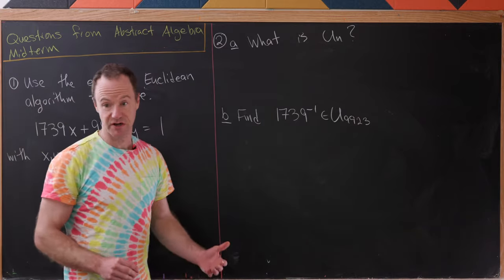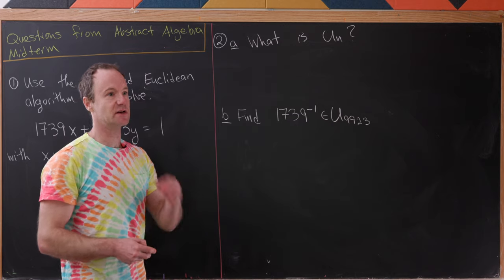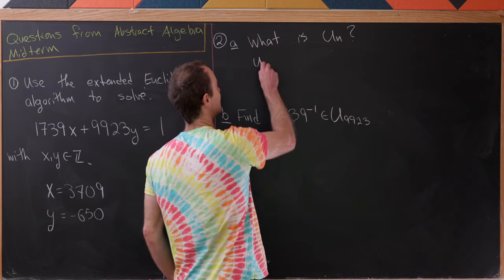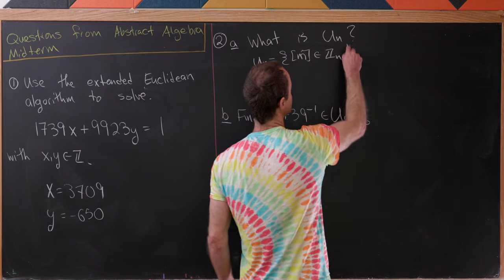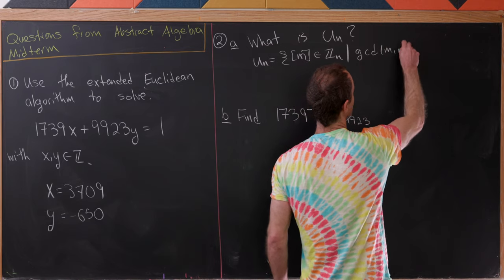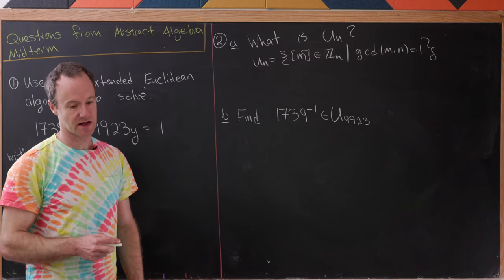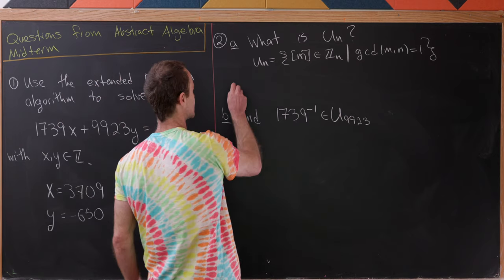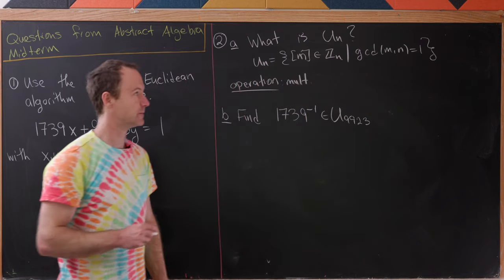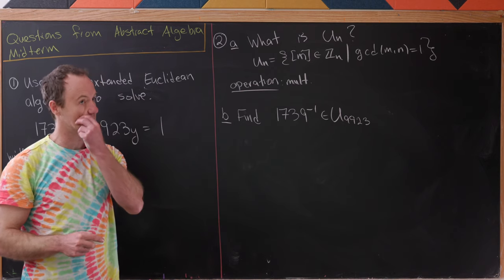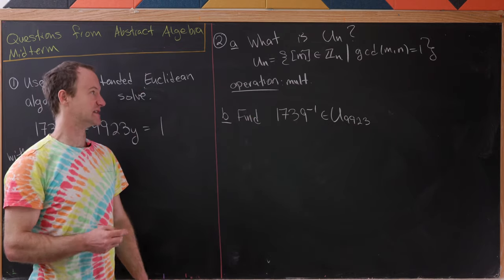Next up, it's a question about a certain group. What is U(N)? What I really mean is describe this group. Well, as a set, U(N) is made up of all of the equivalence classes of m inside of Z(N), where the GCD of m with N is equal to 1. So it's a subset of Z(N) with relatively prime equivalence classes. The operation inside of this group is modular multiplication. We are guaranteed to have an inverse and all of this because that GCD is 1, from a construction we did in class.